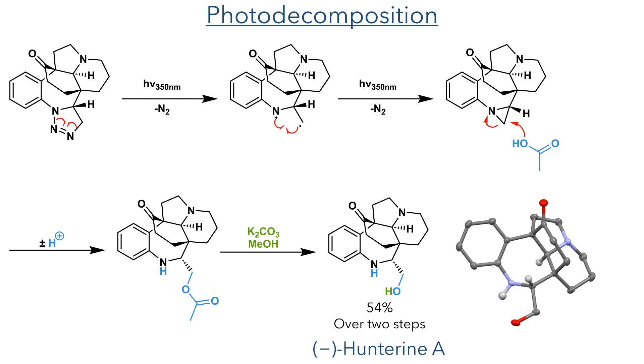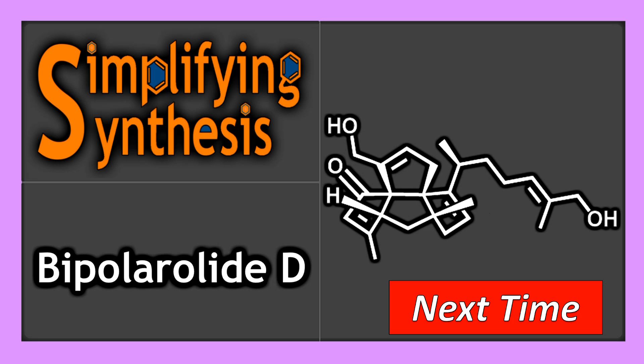This completed the synthesis of Hunterine A, and its structure could unambiguously be proven using X-ray crystallography. I hope you enjoyed that incredibly elegant synthesis. Join me in the next video where we will look at the total synthesis of Bipolaricin.